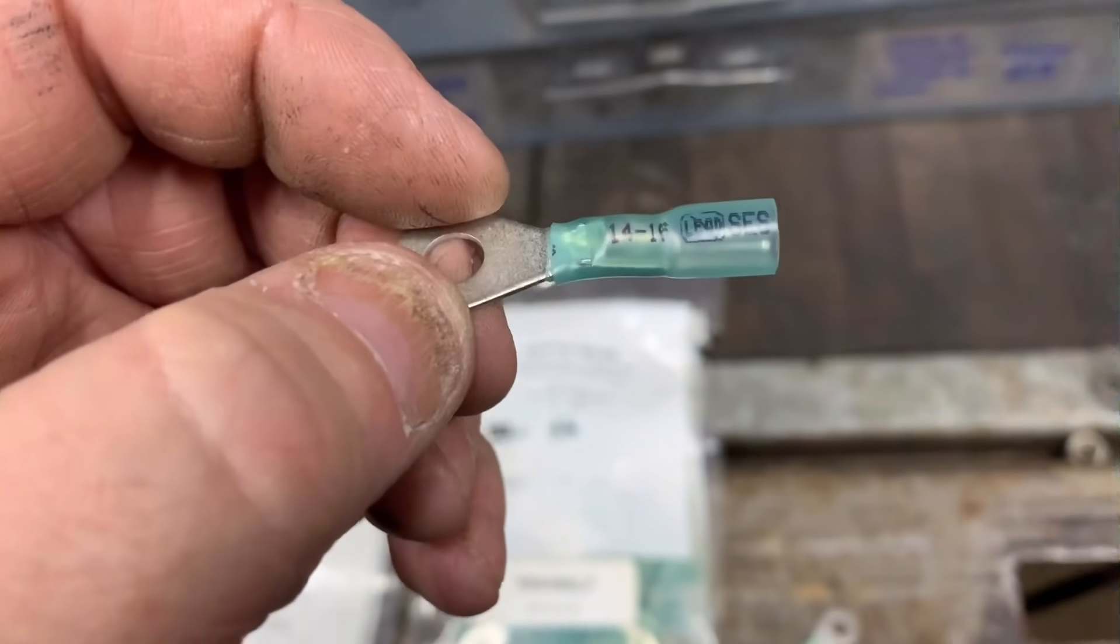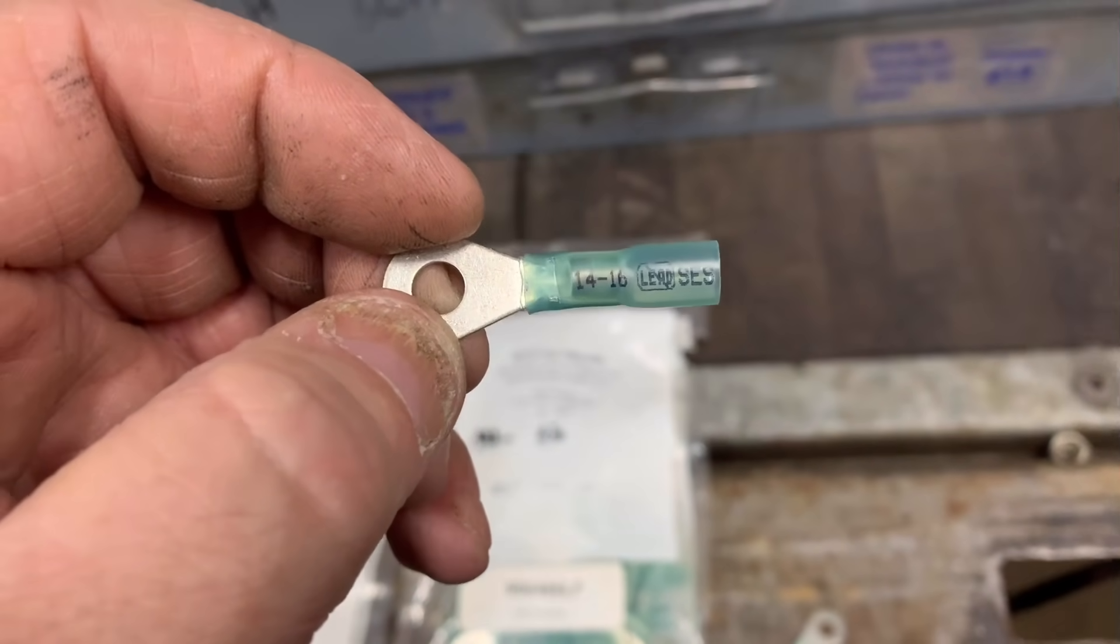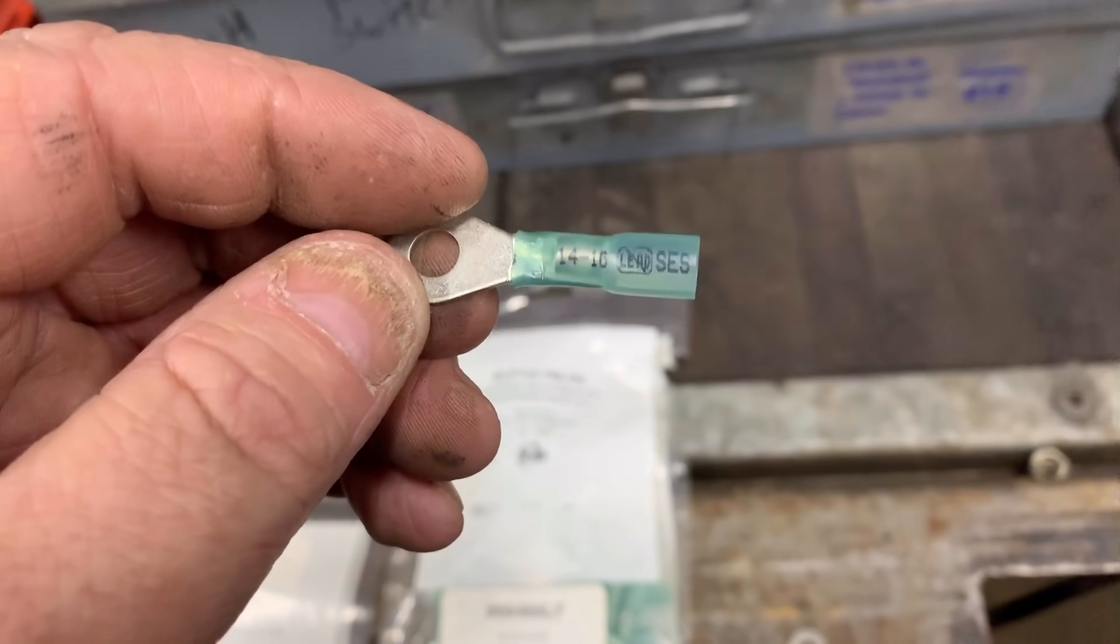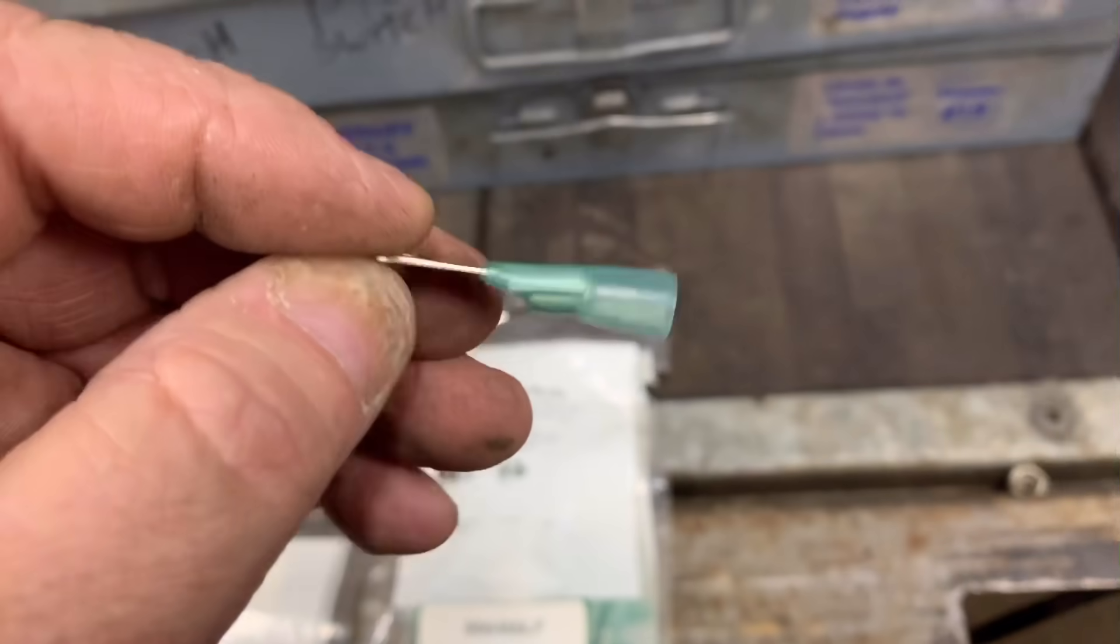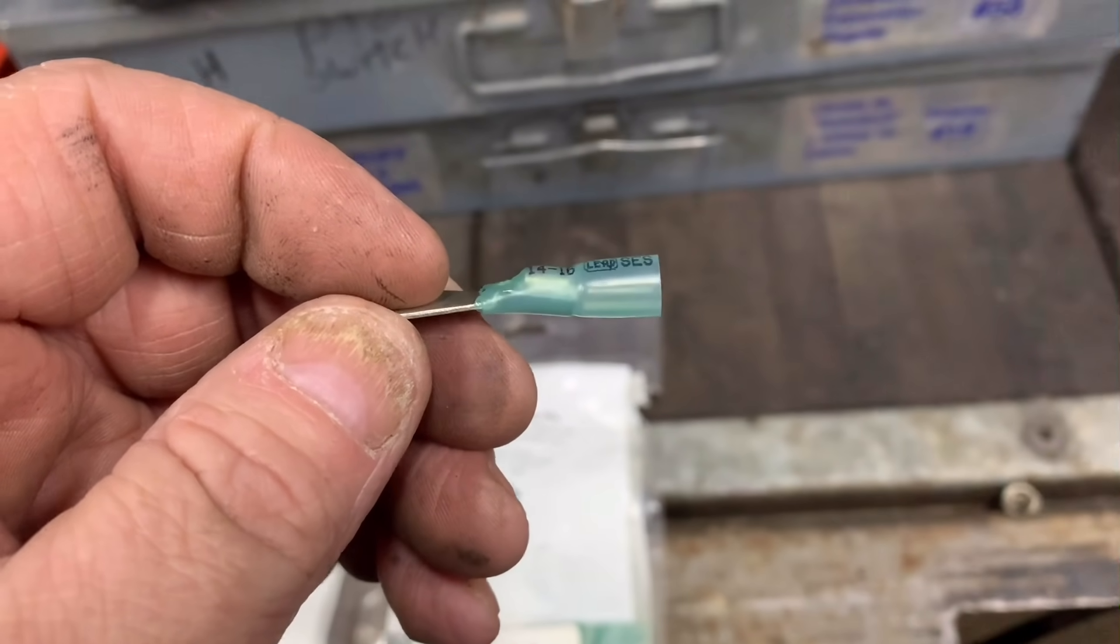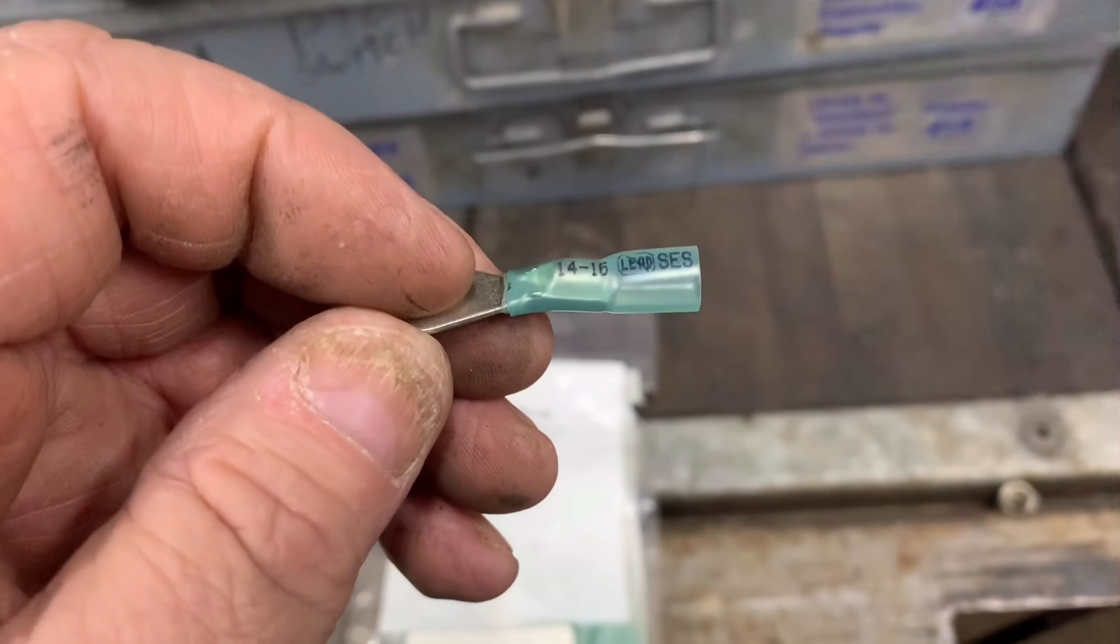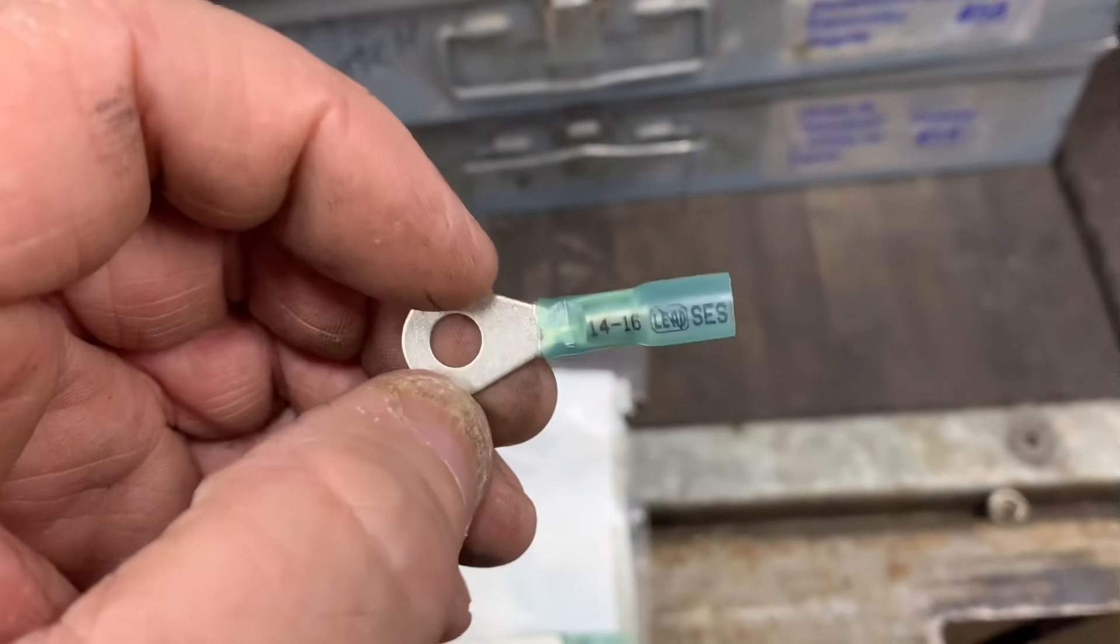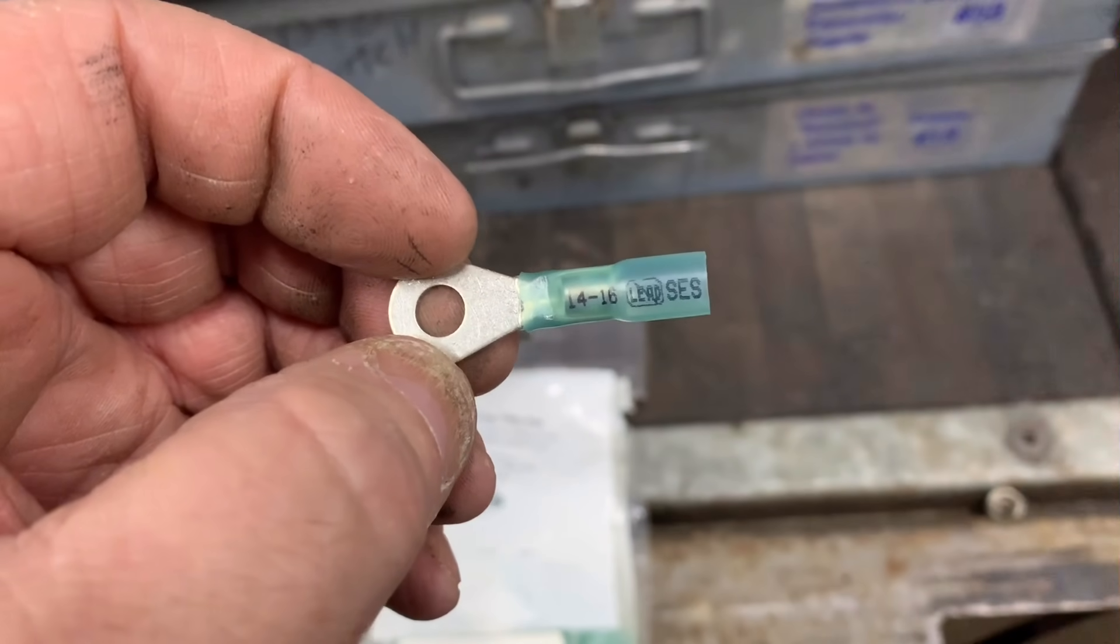So when you put your wire in there and you heat this up, it seals and it solders. You don't have to crimp it. Sometimes I'll crimp it just enough to hold the wire, but whenever you heat it up the solder melts and you have a permanent good connection.